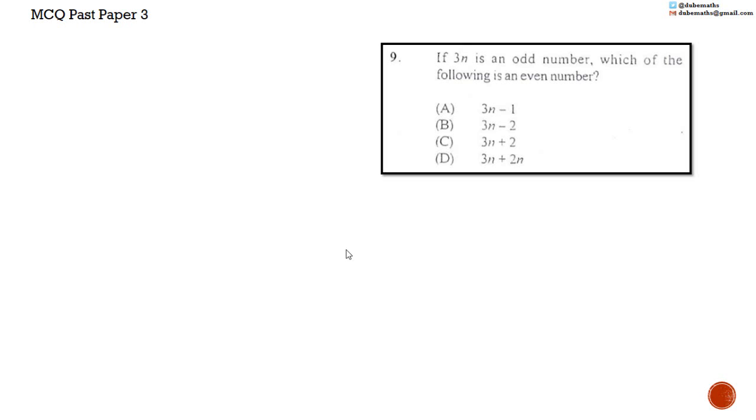Answer A says 3N minus 1. We know that 3N is an odd number. So 3N minus 1 is the number before. Let me explain. Maybe 3N is equal to 9. Then 3N minus 1 would be equal to 9 minus 1, which is equal to 8.